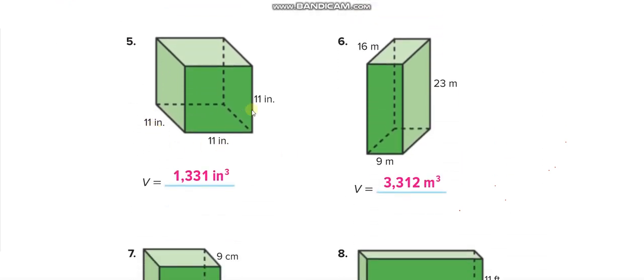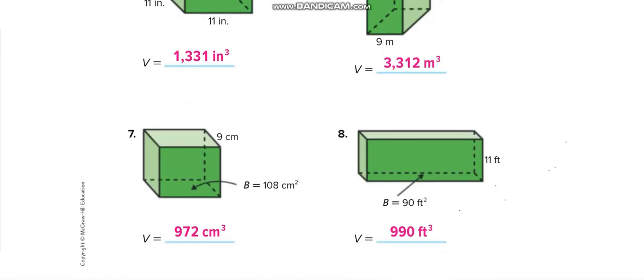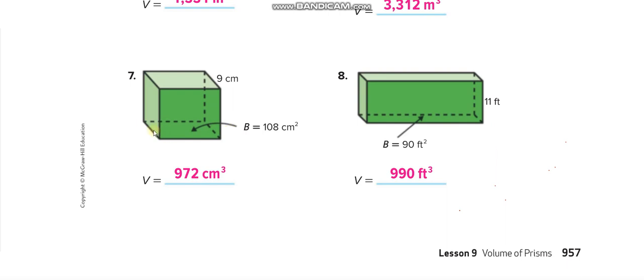11 times 11 times 11 equals 1,331 inches cube. 9 meters times 23 meters times 16 meters, that is 3,312 meters cube. Down here, they told you about the base. They already found the area. You see, this is the area of this base. Got it, guys? What they did is they multiplied the length and the width.